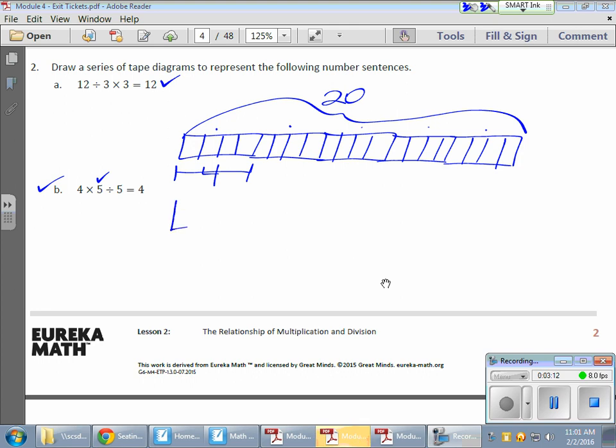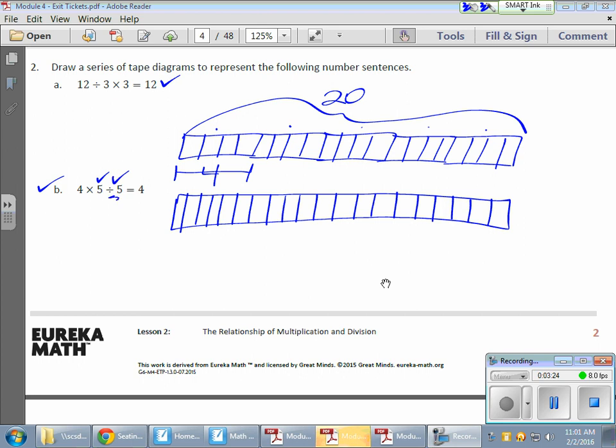Now I need to take that 20, counting 1, 2, 3, 4, 5, 6, 7, 8, 9, 10, 11, 12, 13, 14, 15, 16, 17, 18, 19, 20. I need to split that into five groups, right? Divide by five, which means there are going to be four in each.